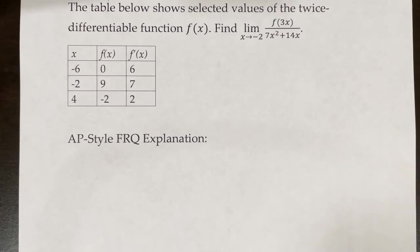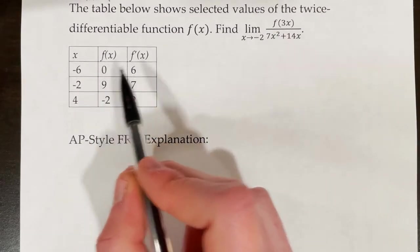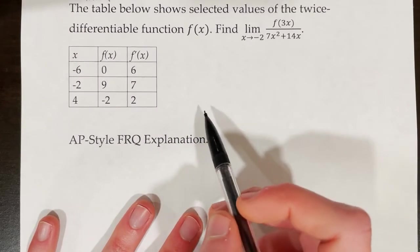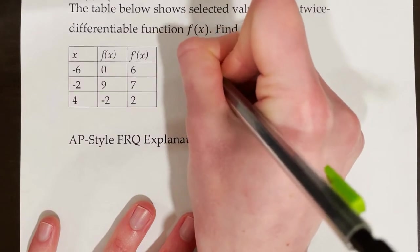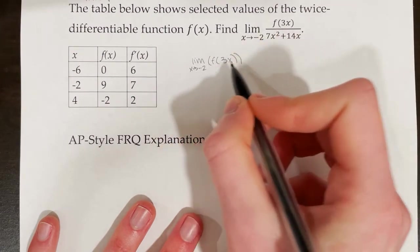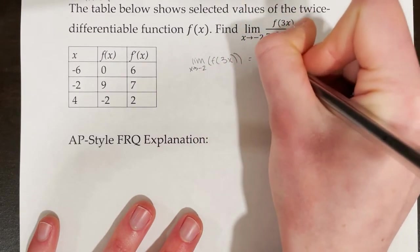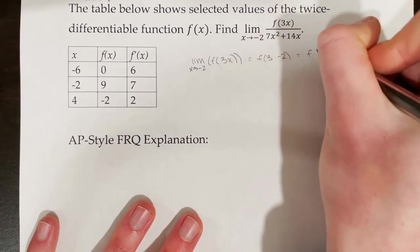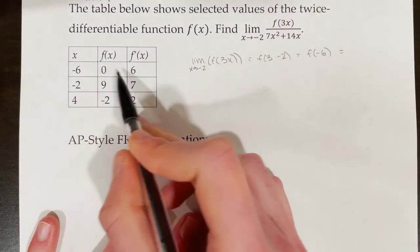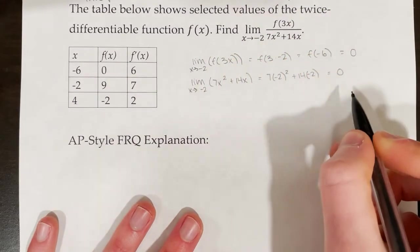Now we'll practice a sample free response question. A table shows selected values of the twice-differentiable function f(x). We need to find the limit as x approaches −2 of f(3x) over (7x² + 14x). Testing the numerator: the limit as x approaches −2 of f(3x) gives f(3·(−2)) = f(−6) = 0 from the table. Testing the denominator also produces 0.